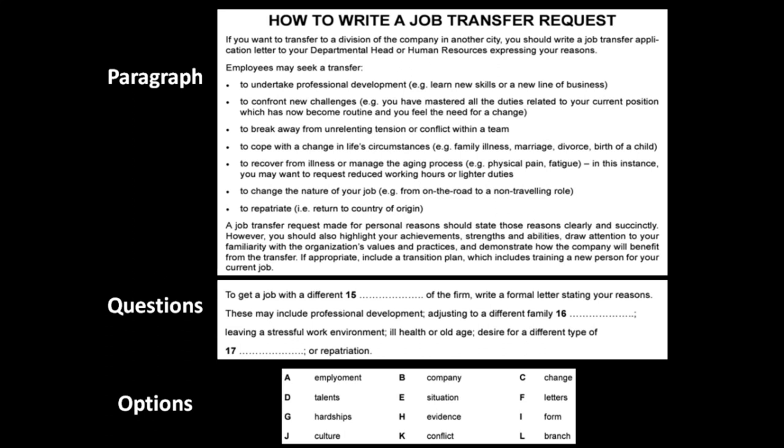The very first line says if you want to transfer to a division of the company in another city — that's typically called a different branch. So the answer to question 15 is definitely 'branch.' If you want the transfer, you should write a job transfer application. Moving to the next line, it says employees may seek a transfer to undertake professional development, confront new challenges, break away from tensions, or cope with a change in life circumstances — for example, family illness, marriage, divorce. So here you get the answer to question 16: adjusting to a different family situation, which can be marriage, divorce, birth of a child, or family illness.